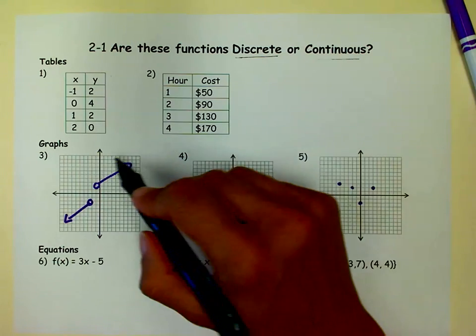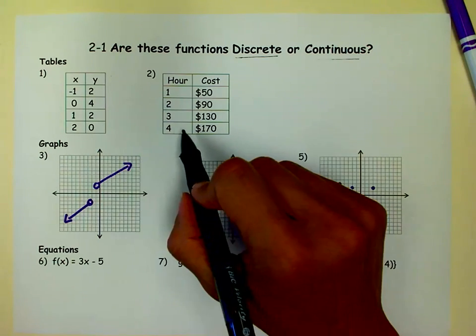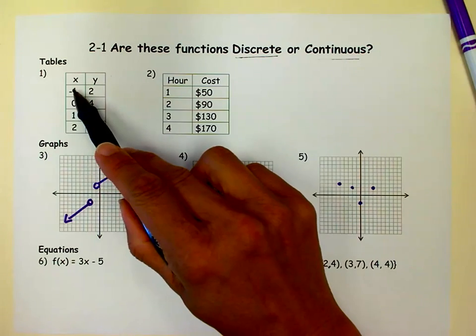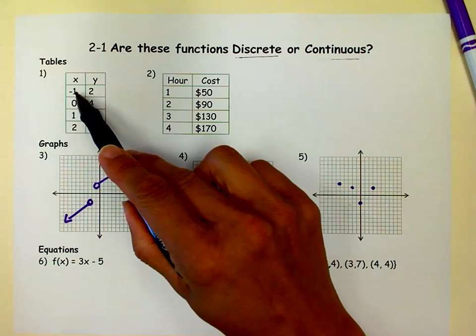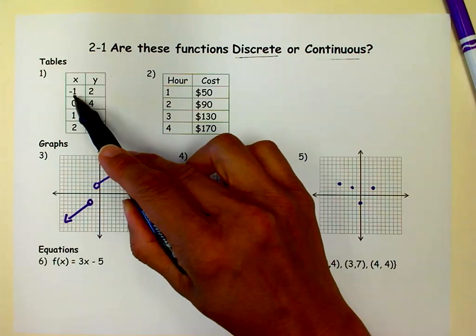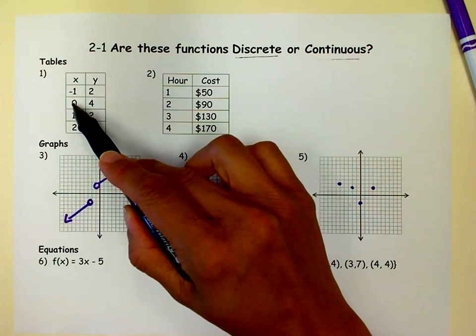So how we tell that is most tables are continuous. I mean, not continuous, they're discrete, because it goes from negative 1 to 0, and you're missing negative 0.5, negative 0.3, all the millions of infinite numbers that are between negative 1 and 0.